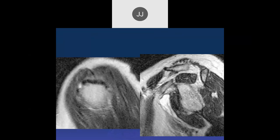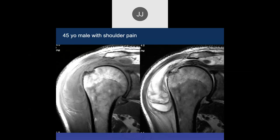This looks like it's been there for quite a while. With acute staph aureus infection it can look that way pretty rapidly, but the deltoid muscle has fat in it, suggesting this is not recent.